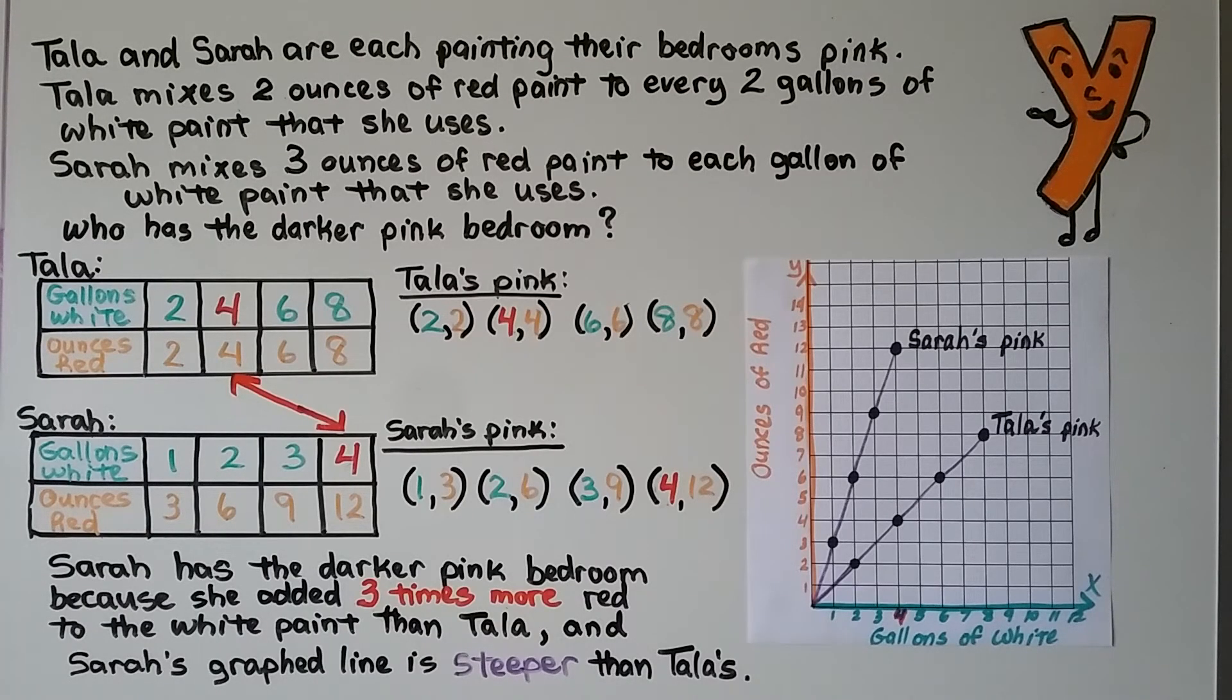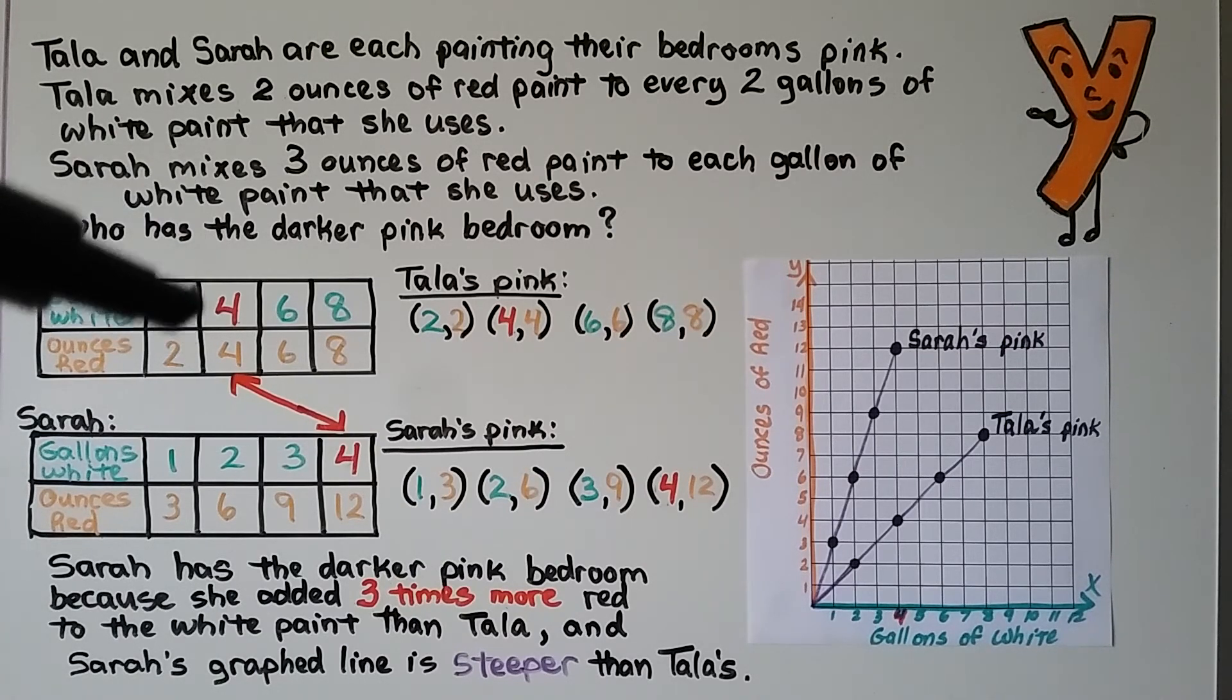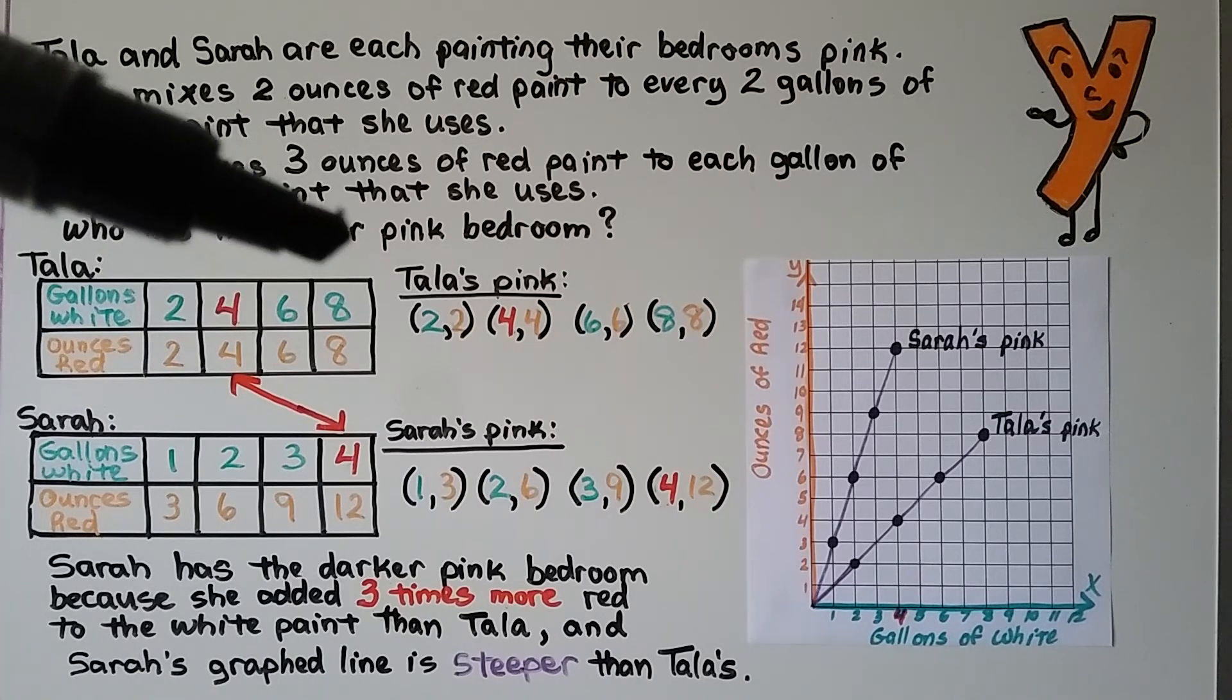Tala and Sarah are each painting their bedrooms pink. Tala mixes 2 ounces of red paint to every 2 gallons of white paint that she uses. That's how she makes her pink. She mixes red and white. Sarah mixes 3 ounces of red paint to each gallon of white. So who has the darker pink bedroom?